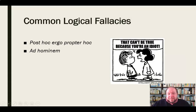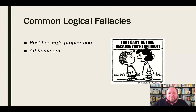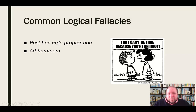Ad hominem means to attack the person — attacking the person instead of attacking their argument. You don't like something somebody says, so you say, 'Well, that can't be true because you're an idiot.' What's the connection there? There's no connection between what they said not being true and them being an idiot. You need to offer specific evidence in response to what they said if you're going to negate their argument. You can't just attack that person. For example, 'I can't believe what this politician said about defense spending because they have a terrible haircut.' What's the connection between the two? That's an ad hominem attack.